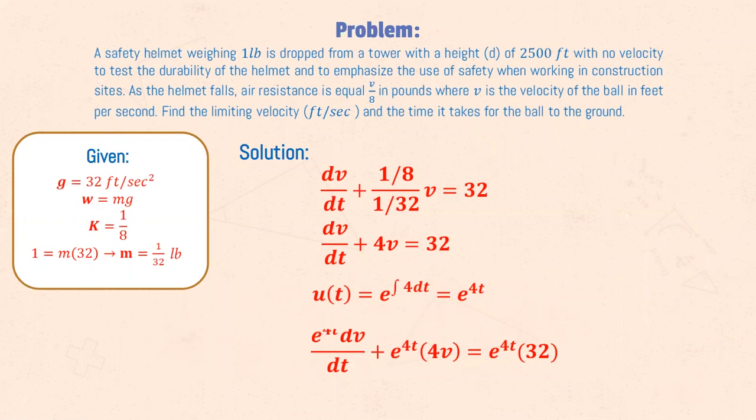The given is in feet, so our gravity is 32 feet per second squared. To solve for the mass, we equate it to the weight equation and get that the mass is 1 over 32 pounds. Our differential equation is from the previous slide. Plugging in the values, we get dv over dt plus 4v equals 32.